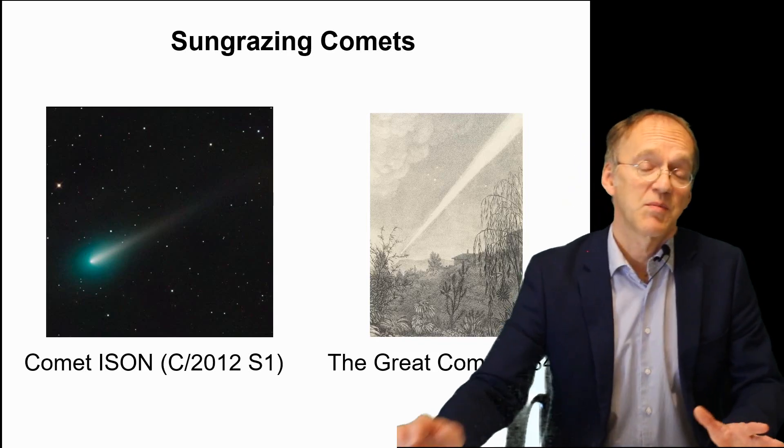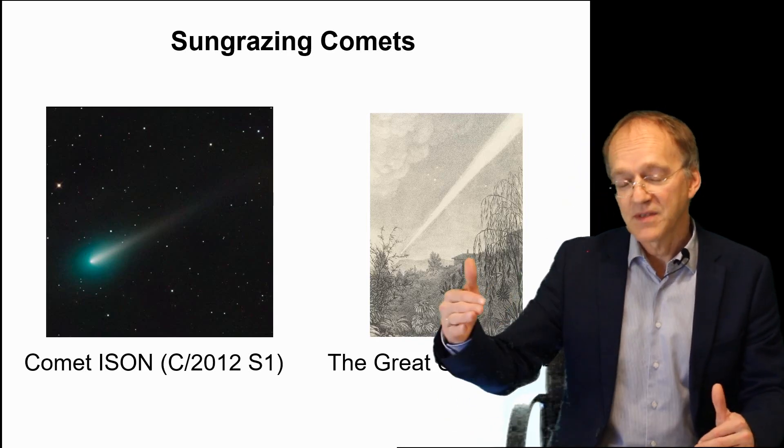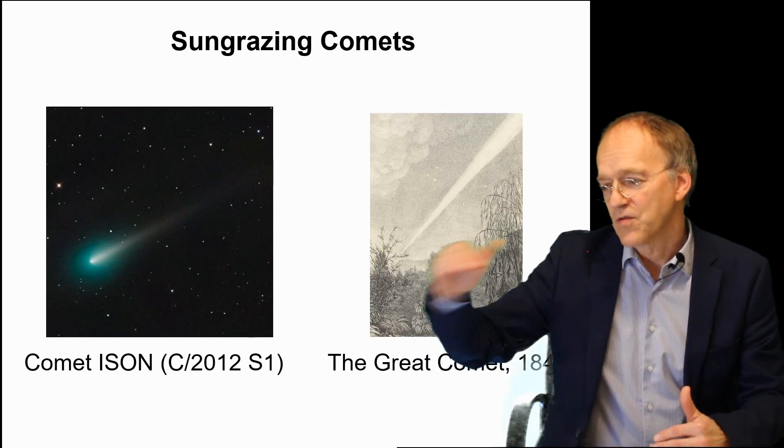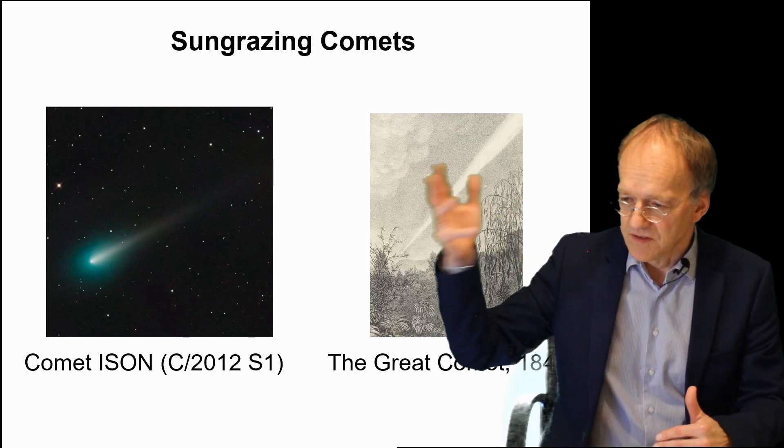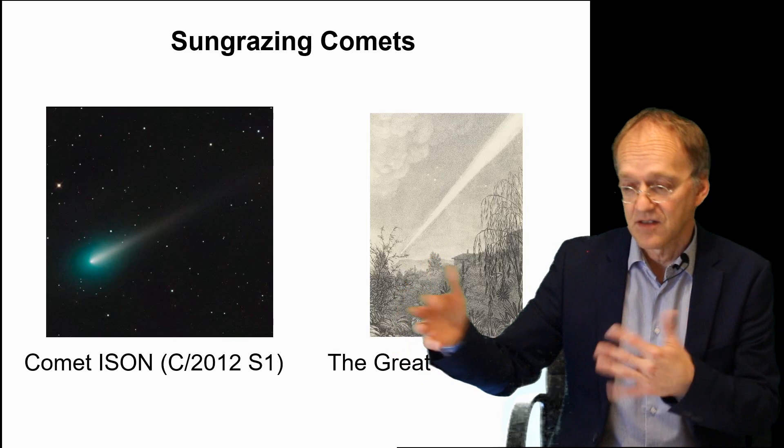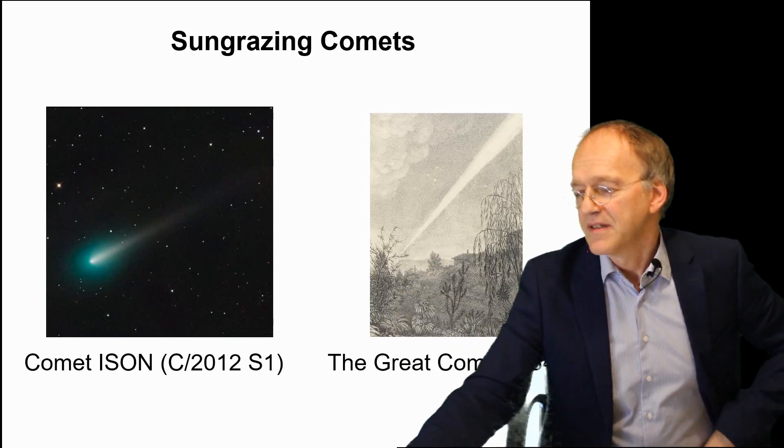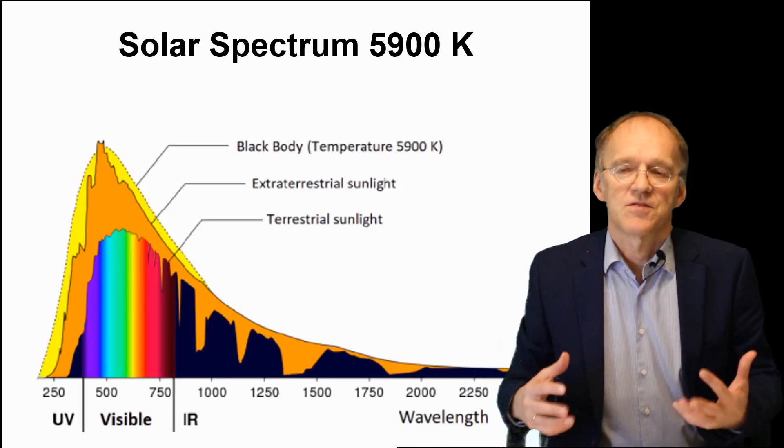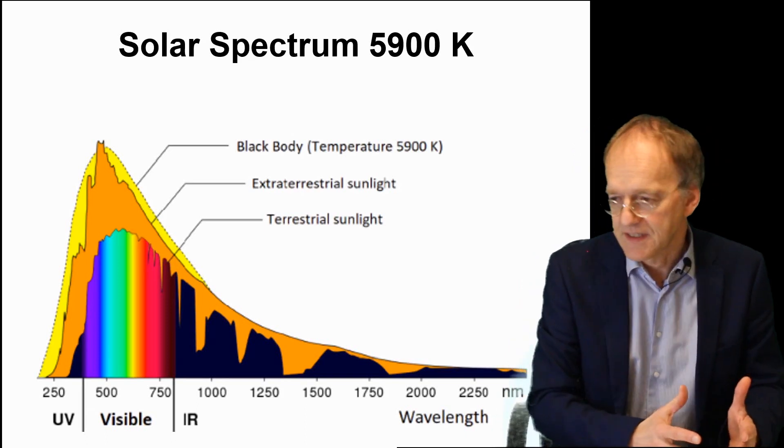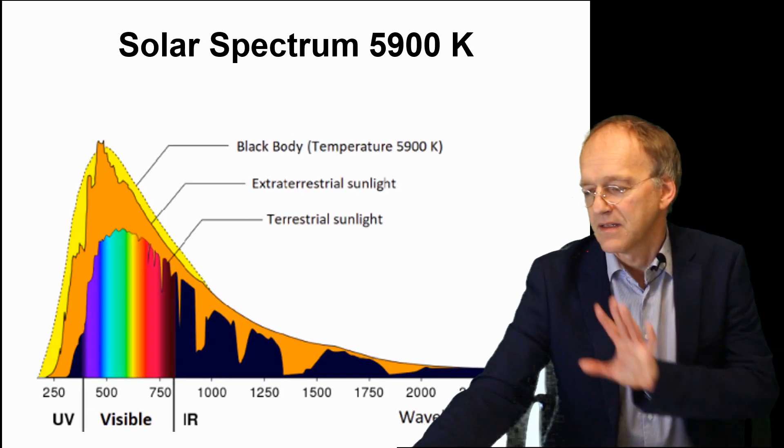Another possible experimental proof would be comets that come very close to the surface of the sun. I think you could distinguish then a very high density from a low density.